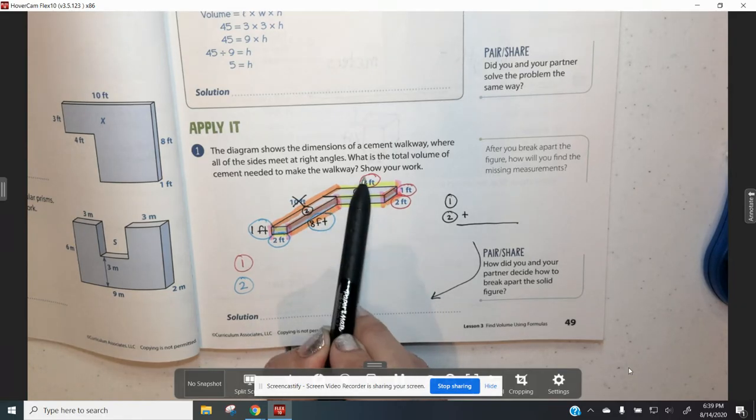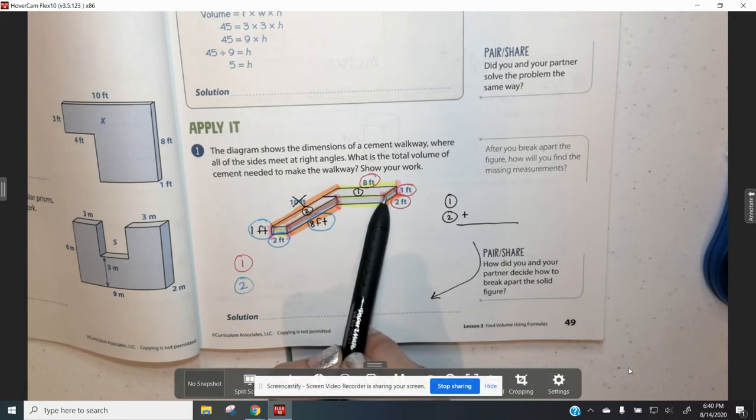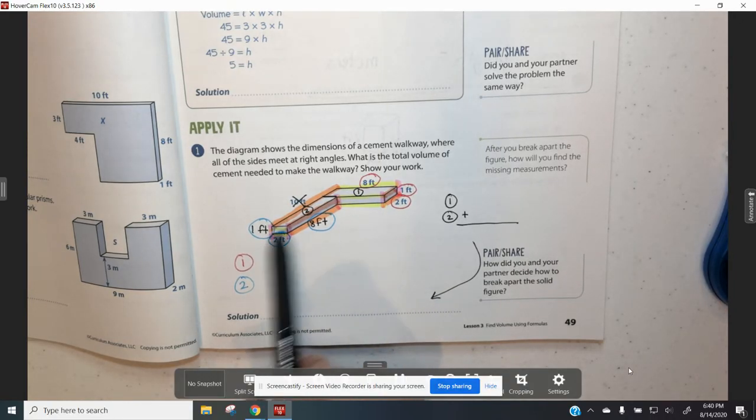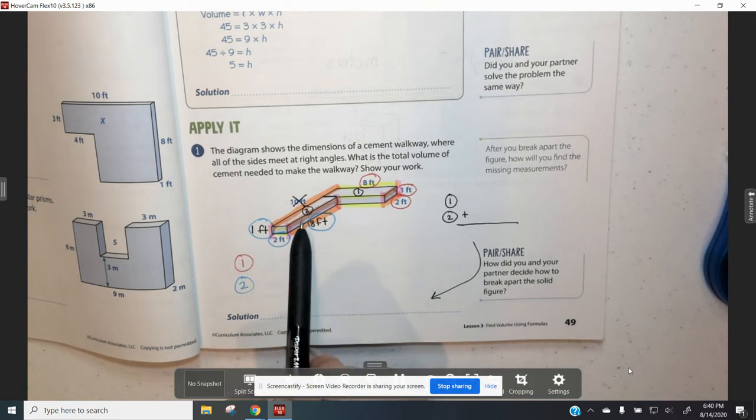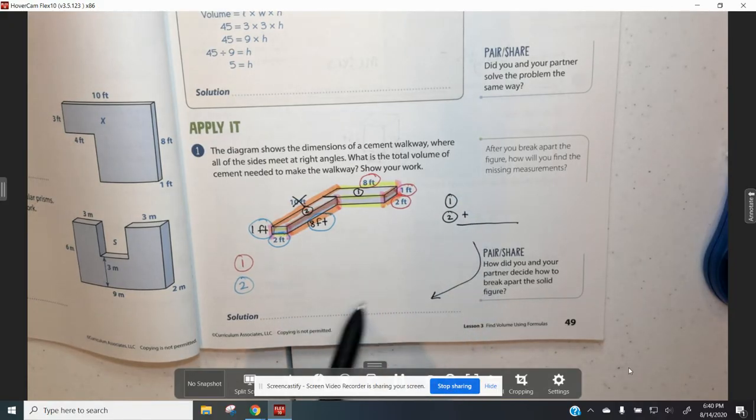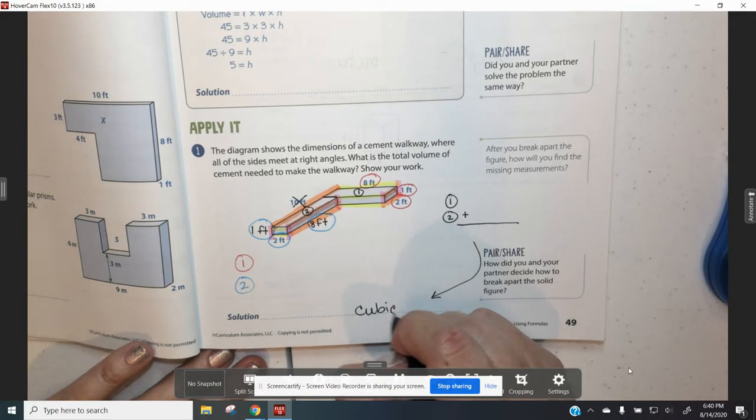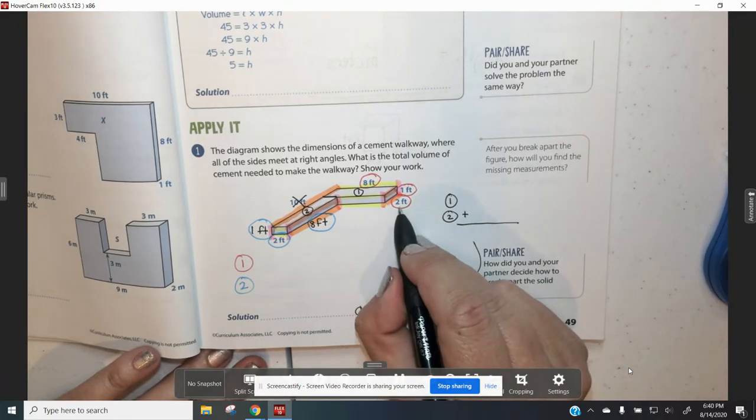I went ahead and broke the rectangular prism into two parts. I showed you the three sides that you would need for figure 1 and the three sides that you would need for figure 2. You're going to find the volume of each figure and then add volume 1 to volume 2. That's going to be your final volume. Don't forget to label your units. We're talking about cubic because it's volume, cubic feet.